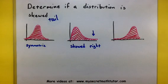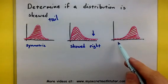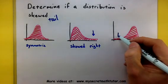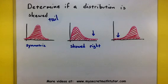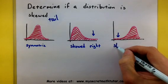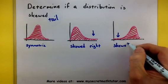See? Not so bad. And one more example. This one also has a tail, but this one has a tail on the left. Therefore, I would say it is skewed left.